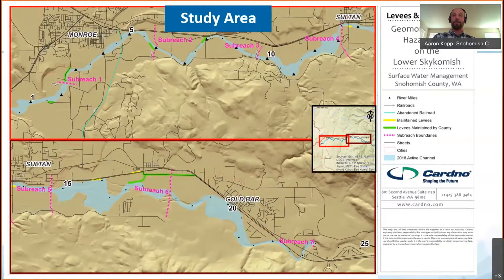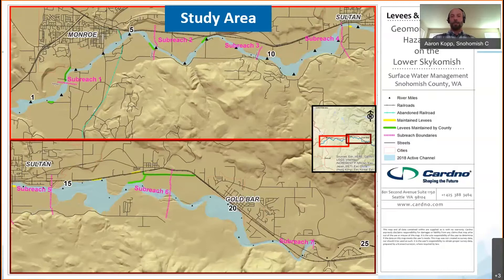The study area followed the Skykomish River along the cities of Goldbar, Sultan, and Monroe downstream to the Snohomish River. The top portion of the map represents the Skykomish River from Monroe to Sultan, while the bottom represents the portion from Sultan to Goldbar. This area has recently had flooding and repetitive loss properties.